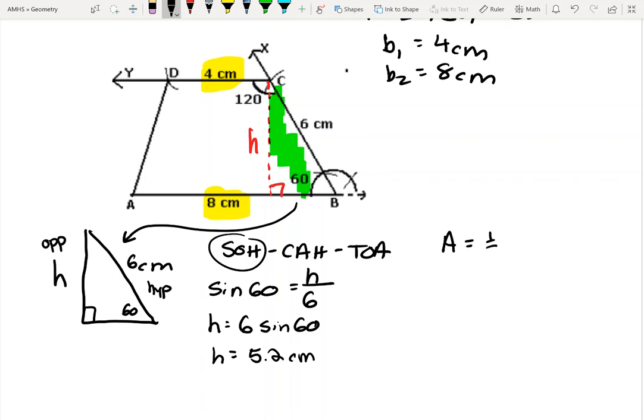Now I'm all ready to plug in. Area equals one half times 5.2, but I'm not actually going to type in 5.2. I'm just going to use the one that's already in the calculator, plus 4 plus 8. When I do that, times 0.5, times 4 plus 8 is 12, I get 31.1769. I round that to 31.2. And the units are centimeters, so this is centimeters squared. Remember your units.